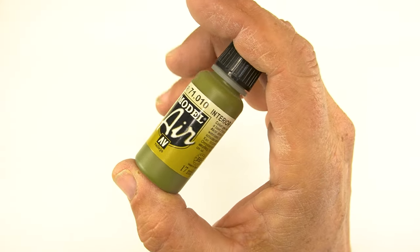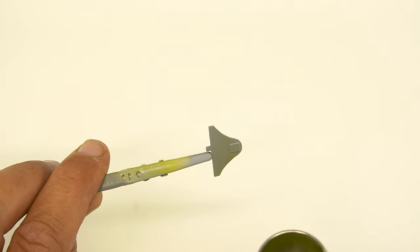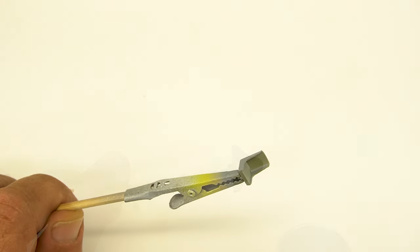I'm going to start with the interior using Model Air by Vallejo, the interior green. We're going to paint up the back plate, the bulletproof plate behind the seat, also the seat and the interior.